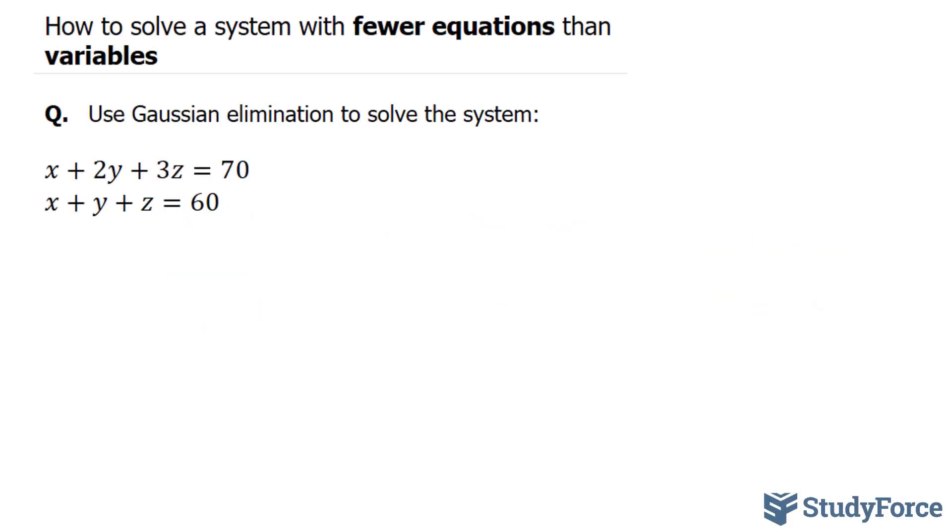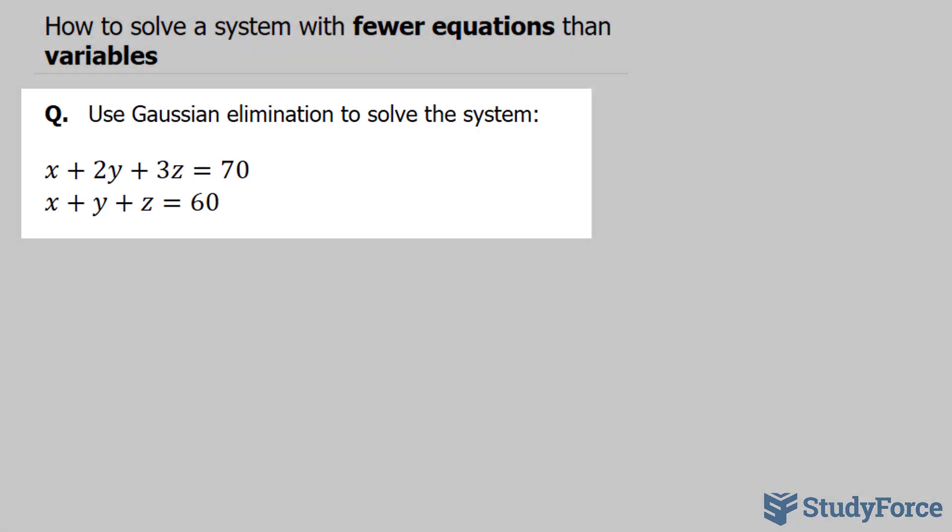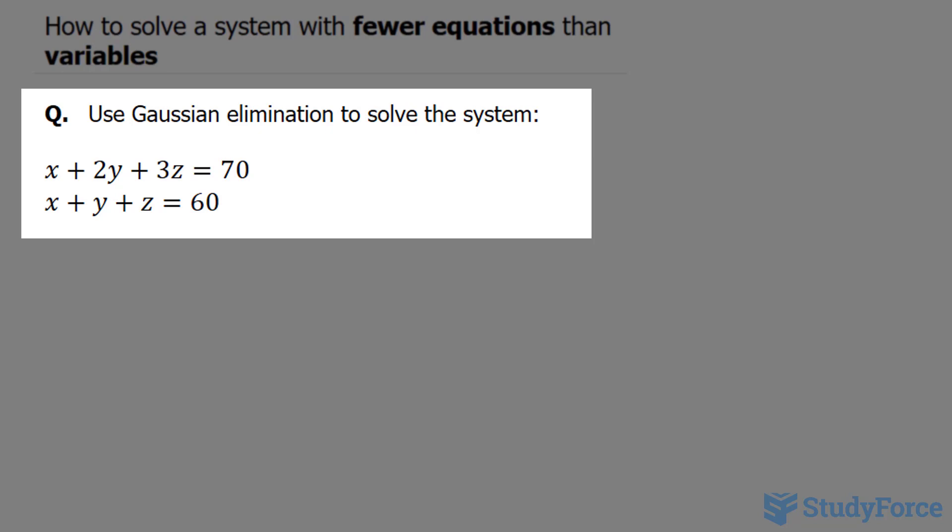In this lesson, I'll show you how to solve a system with fewer equations than variables. The question reads, use Gaussian elimination to solve the system. Notice that our system contains two equations and three unknowns.